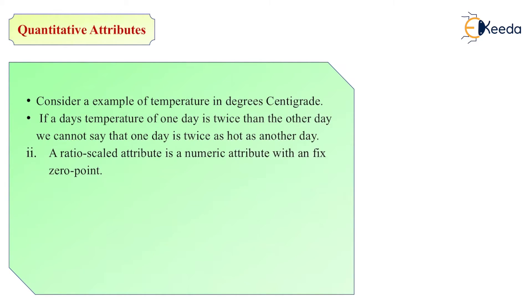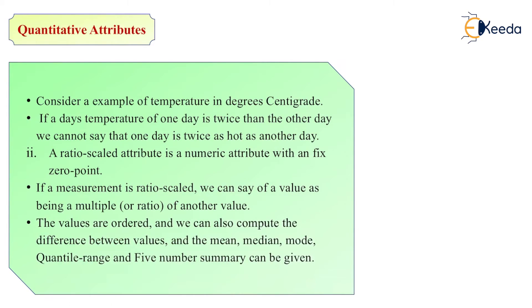A ratio scale attribute is a numeric attribute with a fixed zero point. If a measurement is ratio scaled, we can say a value as being a multiple of another value because it is a ratio. The values are ordered and we can also compute the difference between values, the mean, median, and mode as well as the quantile range and five number summary. These are statistical terms - mean, median, mode, quantile range, and five number summary - we actually consider at the time of box plotting.